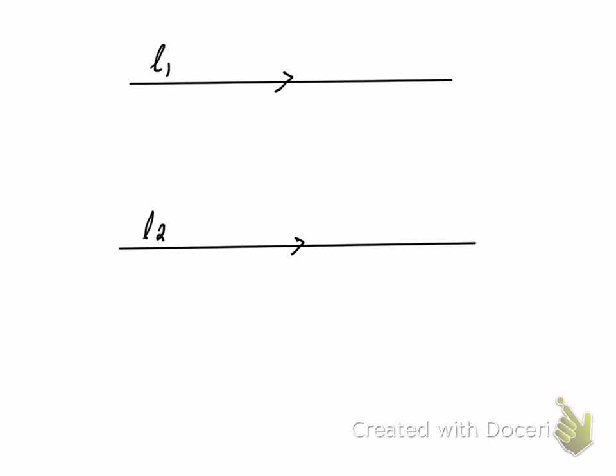In this video, I'm going to teach you another property that's called corresponding angles. We have line 1 here and line 2 here. As you can see, they're both parallel to each other. Line 1 is parallel to line 2.